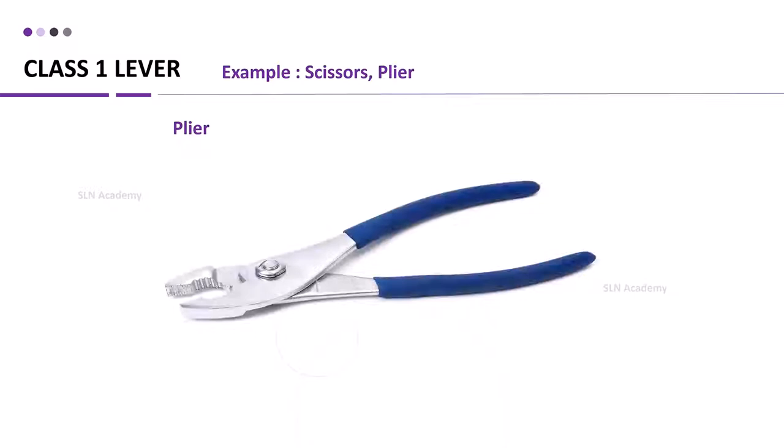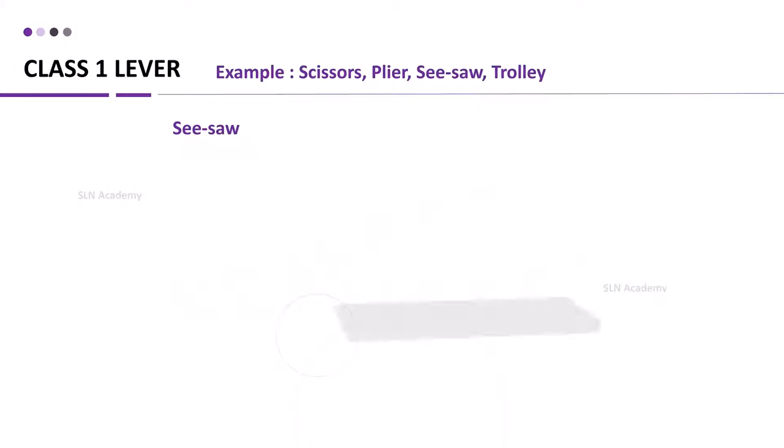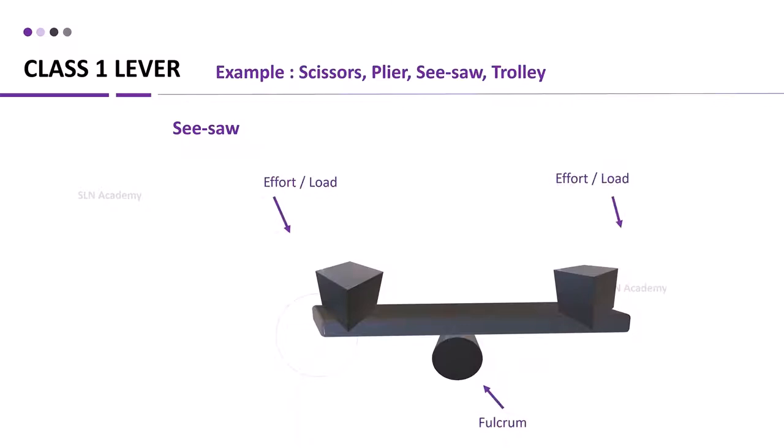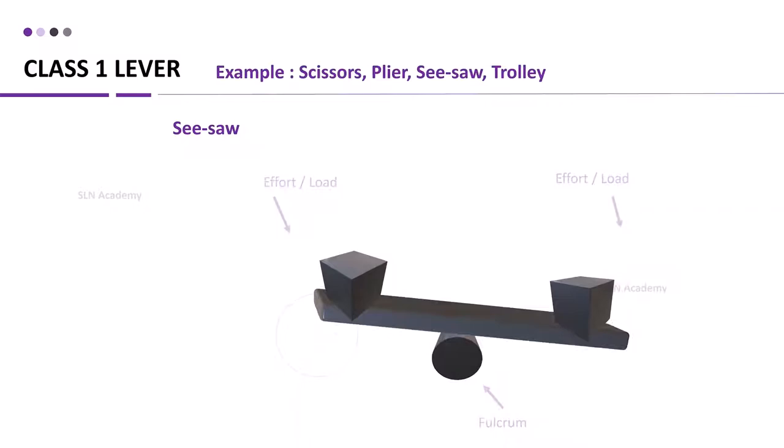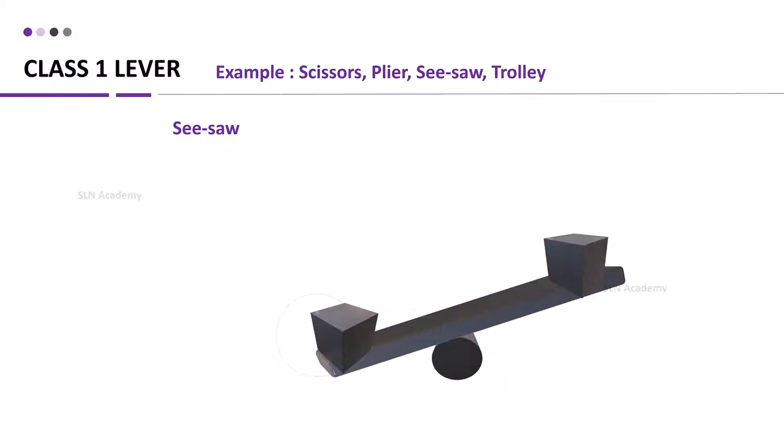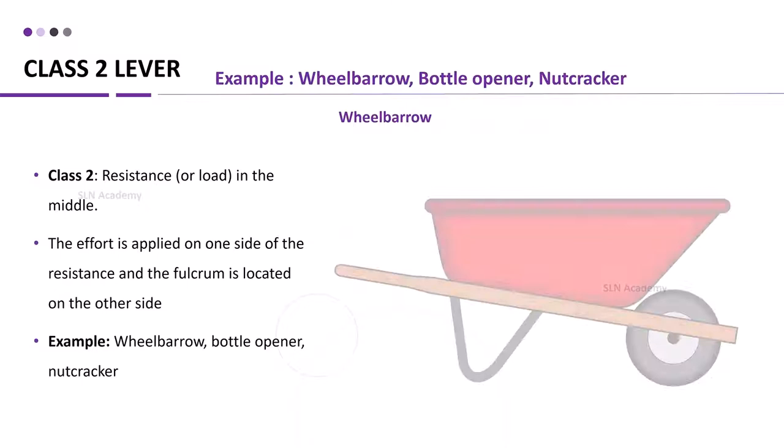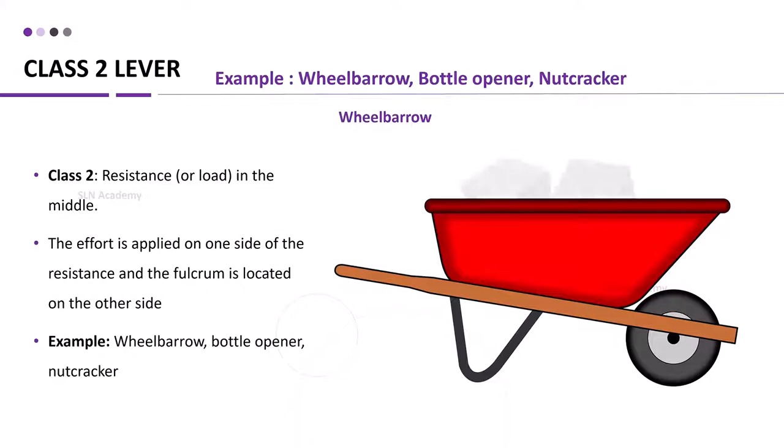Load at one end and effort is at the another end. Plier is another example of class 1 lever. Fulcrum, the fixed point, is at the middle of the object. Load at one end and effort is at the other end. Seesaw. Here also, fulcrum is at the middle of the object.